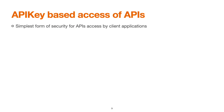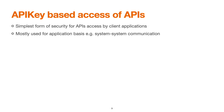API key-based access is the simplest form of security for API access by client applications. It is mostly used on an application basis — for example, when one application needs to call another application's API. This is for system-to-system communication, and in that use case, we can go for an API key-based approach.